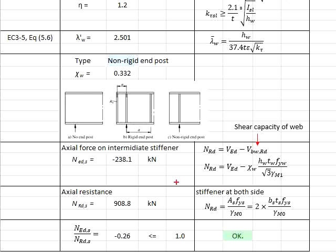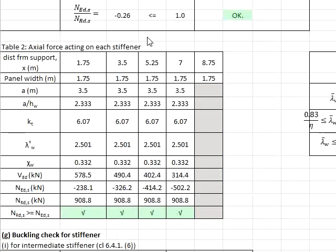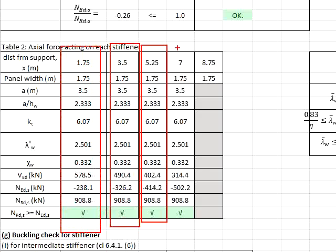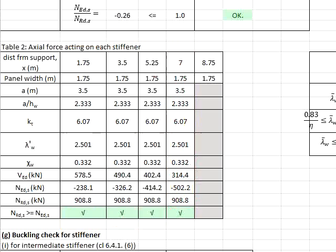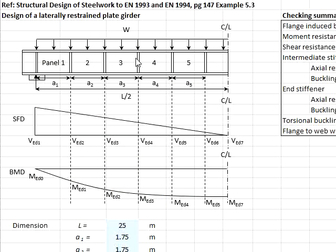Again, you will have to check for the axial force for every stiffener along the span. This is particularly important, especially when the spacing between the stiffeners varies along the span.